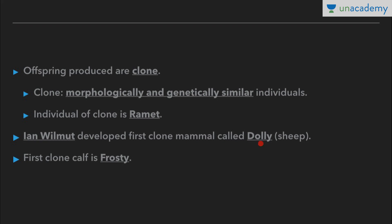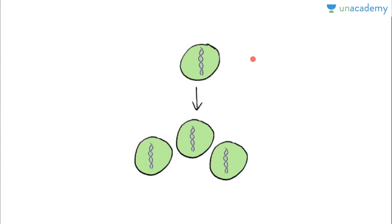Ian Wilmut developed the first cloned mammal called Dolly, which is a sheep. Cloning occurred around the 1990s. Ian Wilmut was the scientist to develop the first cloned mammal, Dolly. The first cloned calf was also produced, named Frosty. Today we can see clones of almost every organism. This is a single parent giving rise to offspring that are exactly similar to itself and also similar among themselves — that is asexual reproduction.